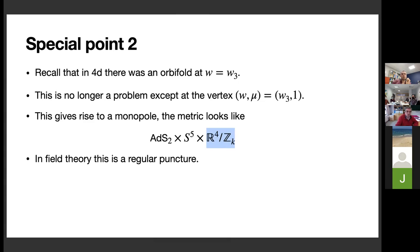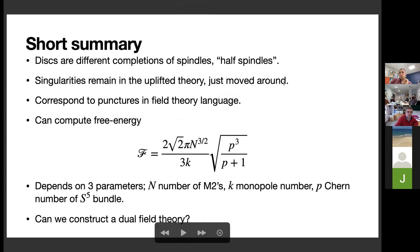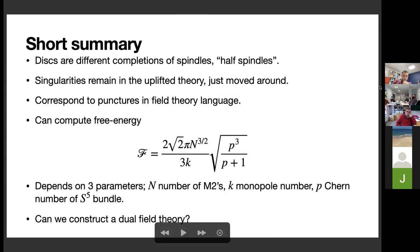The second special point, at w = w_3 and μ = 1, gives a monopole — characterized by R^4 / Z_k in the geometry — meaning an M2 brane probed by R^4 / Z_k. In field theory language this is a conical deficit at the south pole of the disc, which is a regular puncture. In summary, discs and spindles are intimately related: a disc is half a spindle. Whereas the singularities of the spindle are completely removed in the uplift, for the disc they are moved to special points that nonetheless correspond to meaningful physics. The free energy of the disc depends on three parameters: number of M2 branes, the orbifold number k labeling the regular puncture, and the magnetic charge or holonomy labeling the irregular puncture.